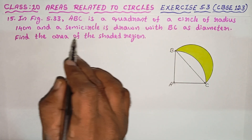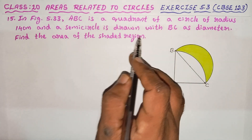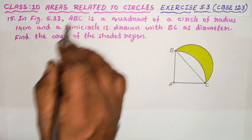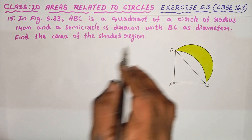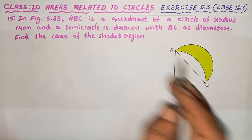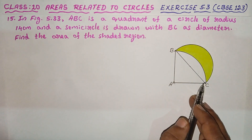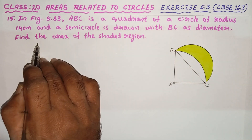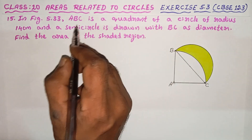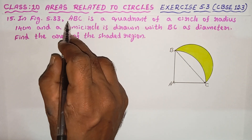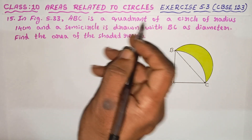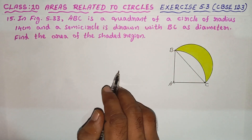Find the area of the shaded region. Let us check the values of the area. A, B, C is a quadrant of a circle.